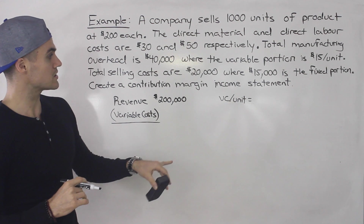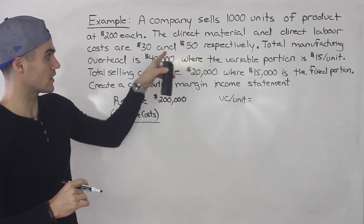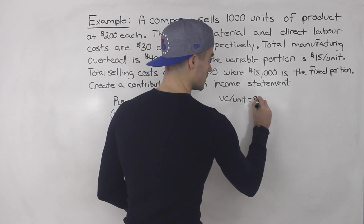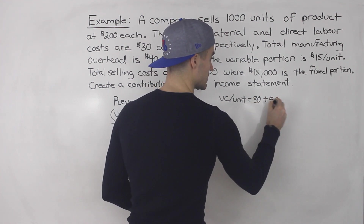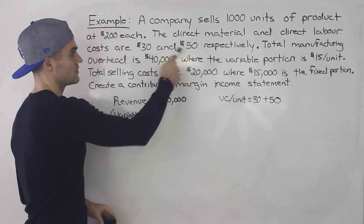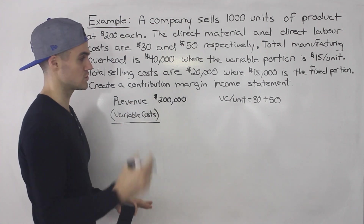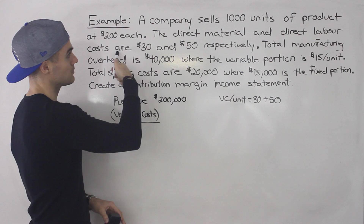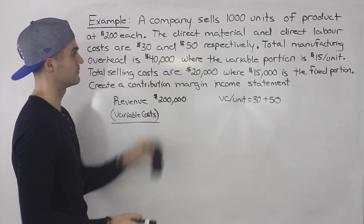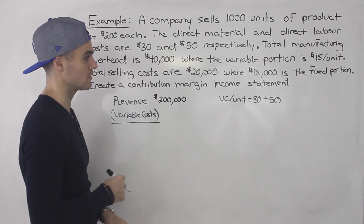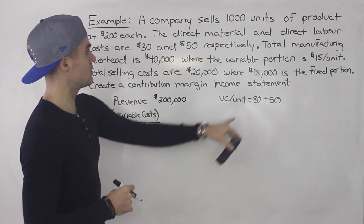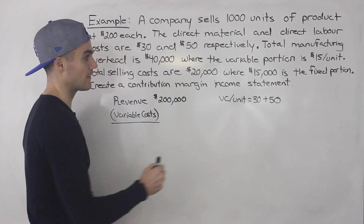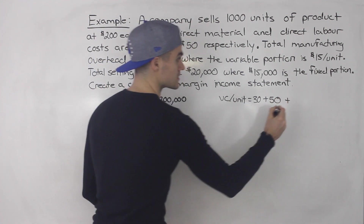So for the variable cost per unit, we know direct material and direct labor are part of that — $30 plus $50. Notice that $30 and $50 are low enough that we can assume they're per unit. So direct material and direct labor are included. What else goes under variable costs? Variable manufacturing overhead and variable period expenses.